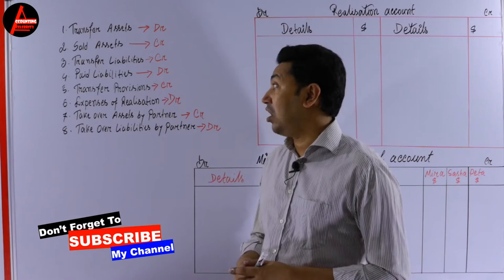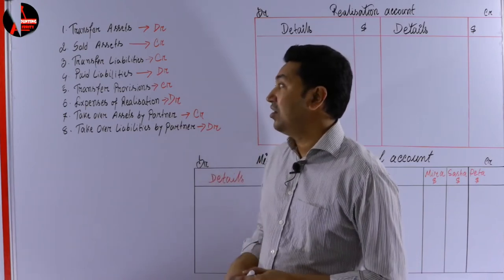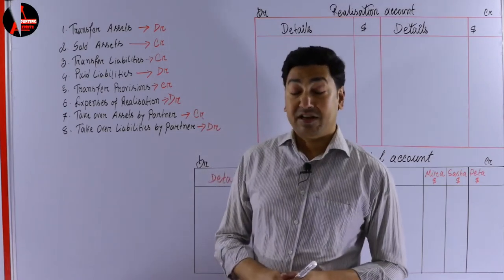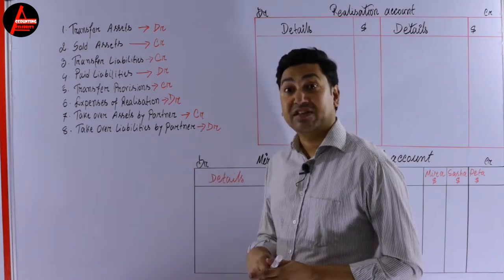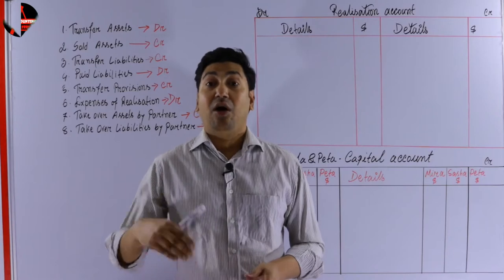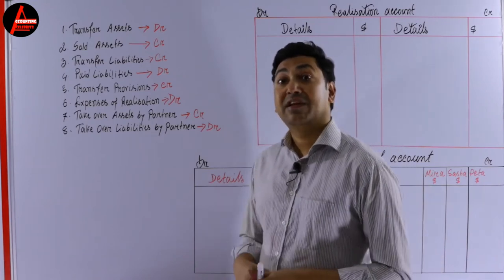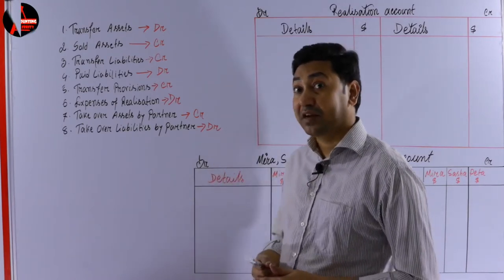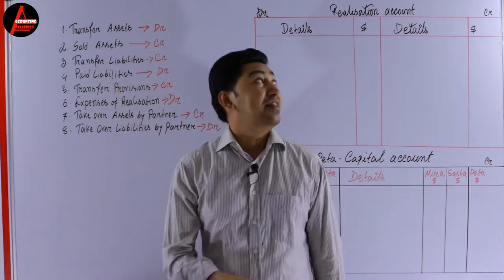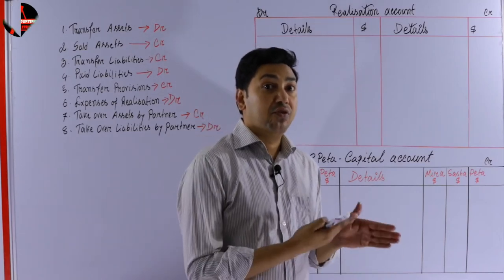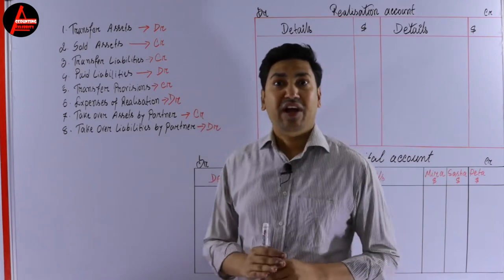Fifth, transfer of provisions such as provision for doubtful debt, general reserve, and provision for depreciation — these are recorded on the credit side. Sixth, expenses of realization — any costs of realization are recorded on the debit side. Seventh, if any partner takes over any asset, that asset is recorded on the credit side in the name of that partner's capital account. Eighth, if a liability is taken over by a partner, record it on the debit side in the name of that partner's capital account. Remember: assets are recorded at book value.